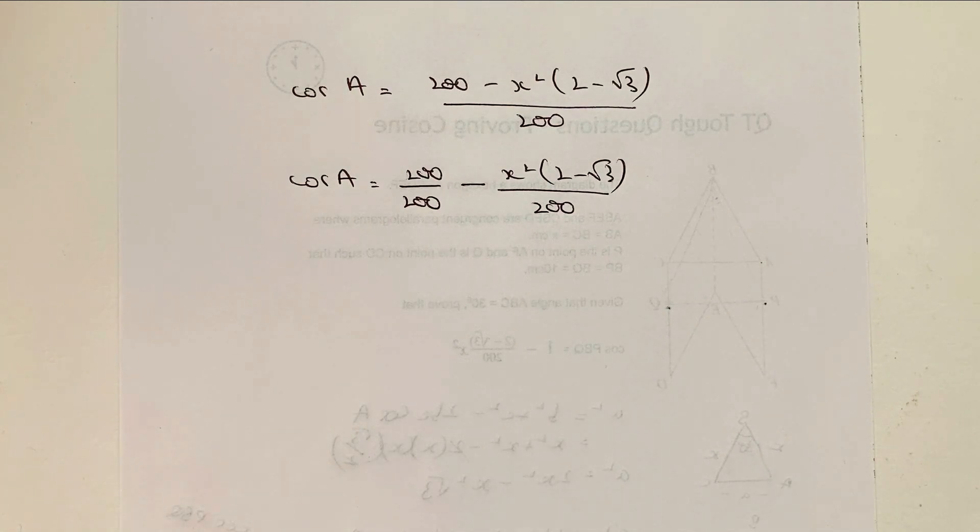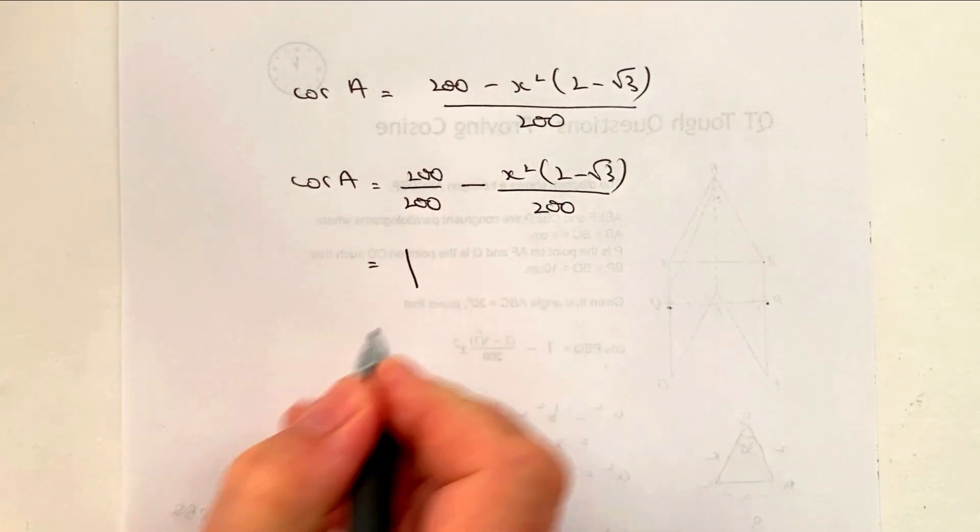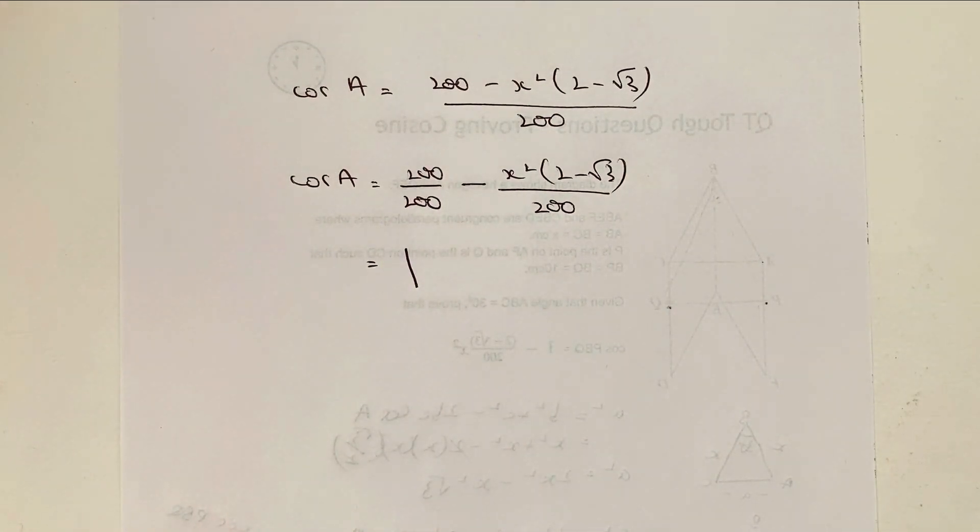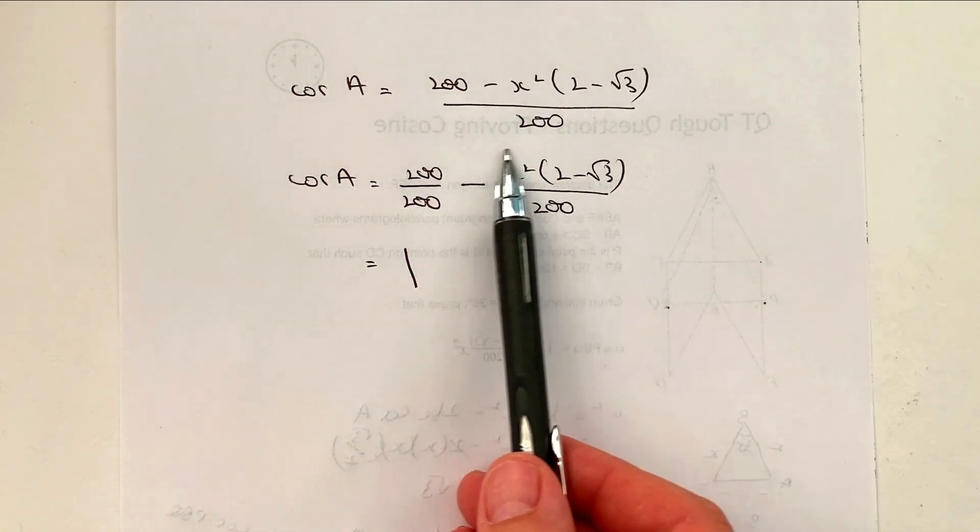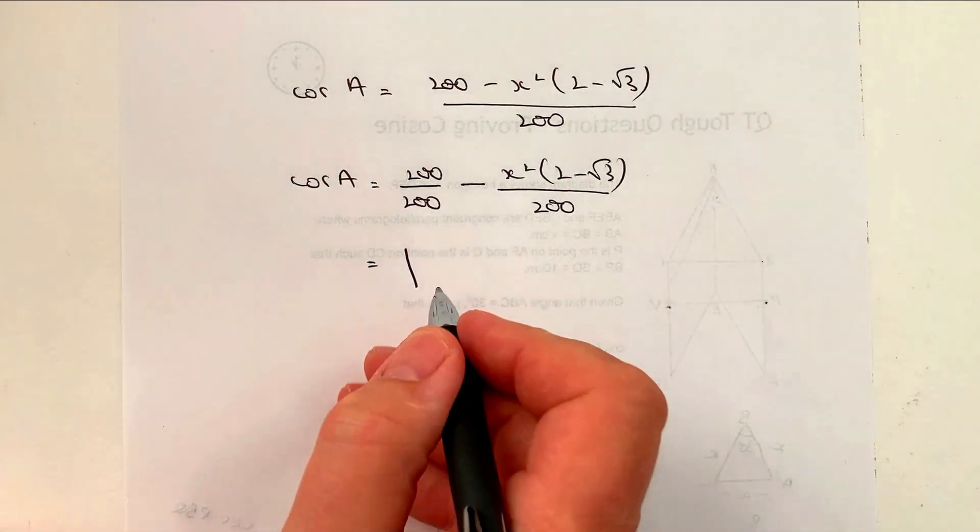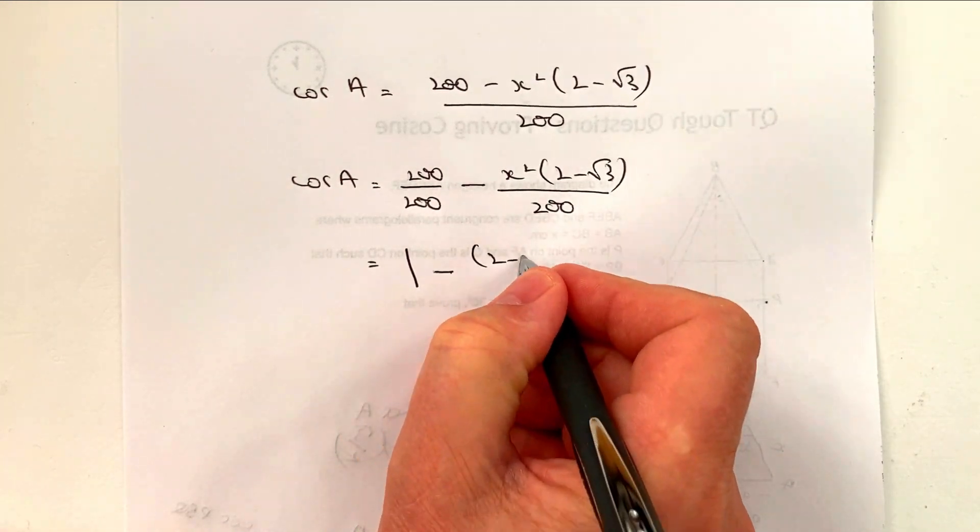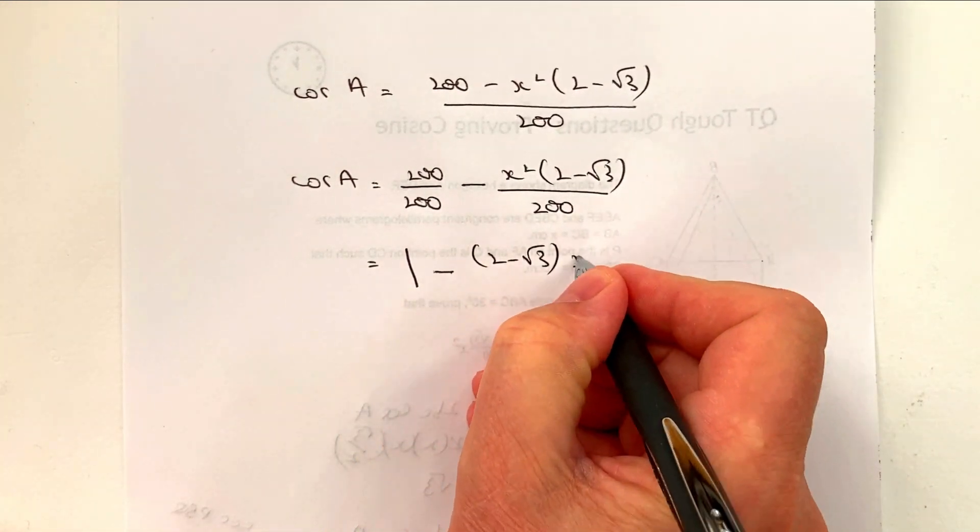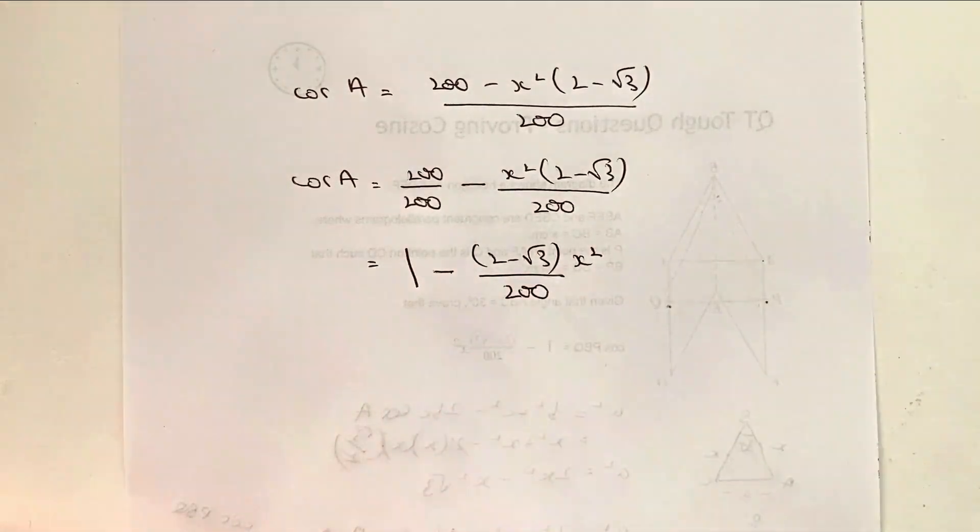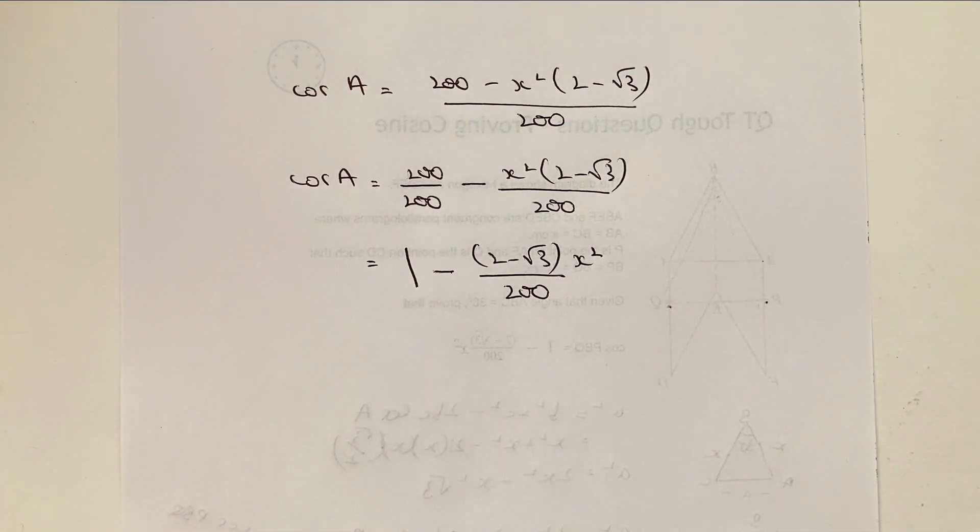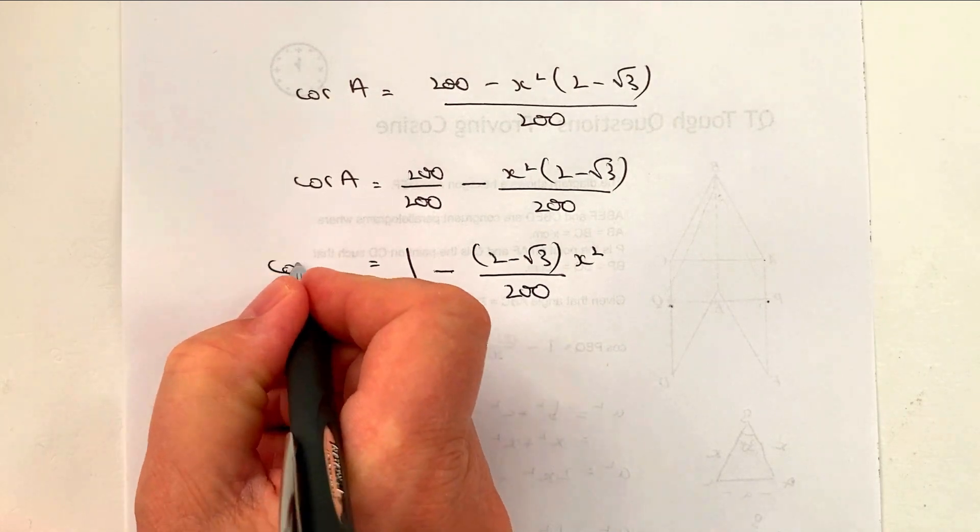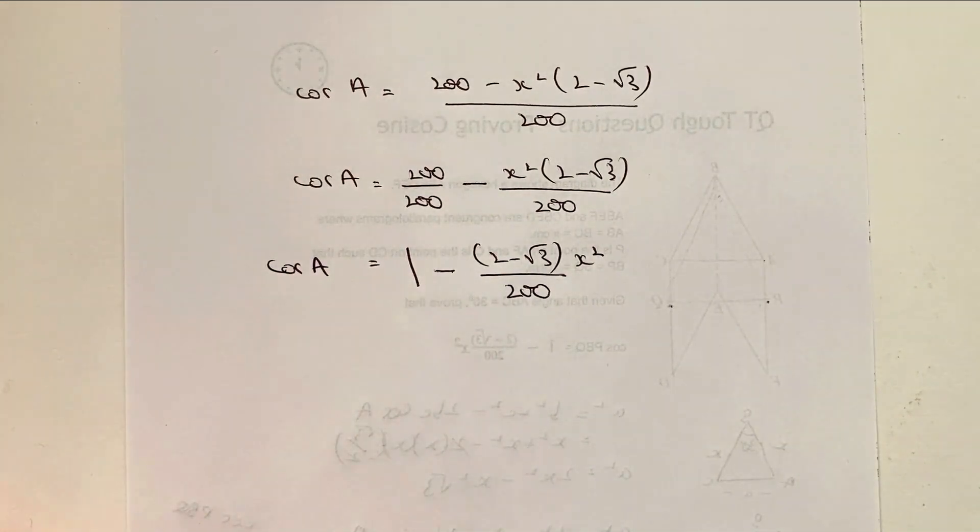Okay, so 200 divided by 200 is going to be equal to 1. That's great. Fantastic. And then really, this can just be rewritten as it is in the original question as 2 minus root 3 multiplied by x squared, all divided by 200. And actually, that's the answer to the question and the proof itself.